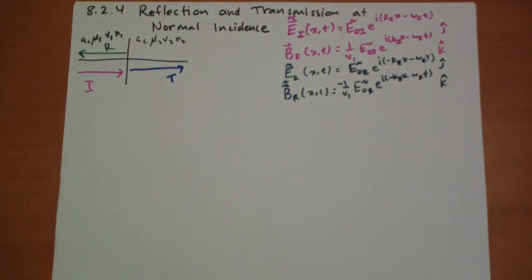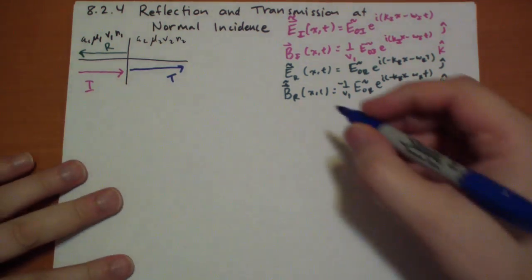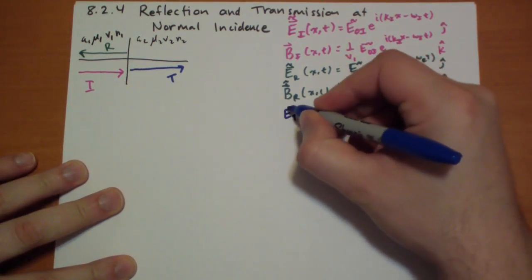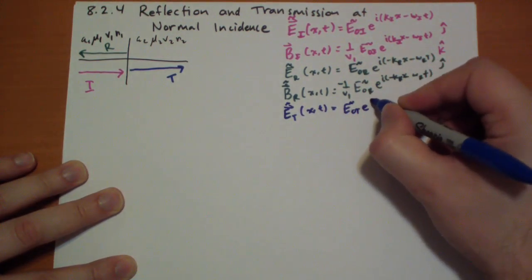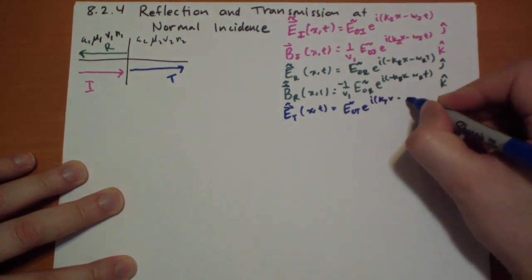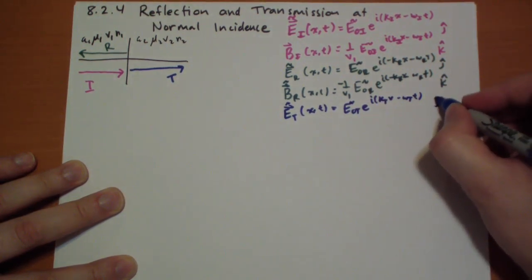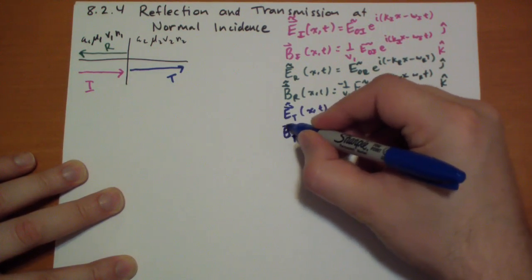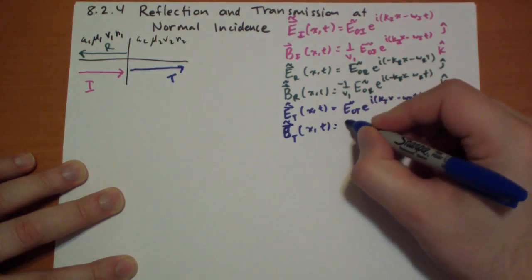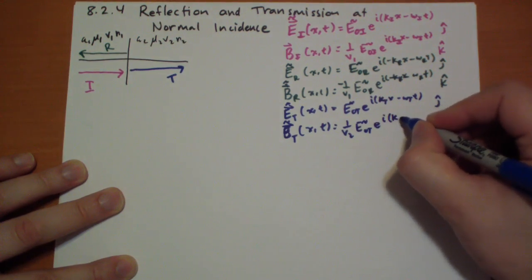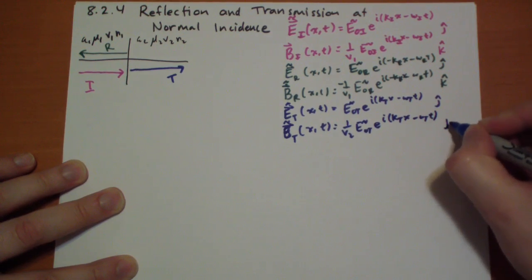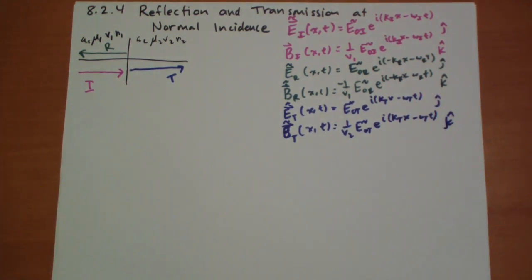So then we have E t vector complex as a function of x and t. It's equal to E naught t complex e to the i kappa t x minus omega t t in the j hat direction.